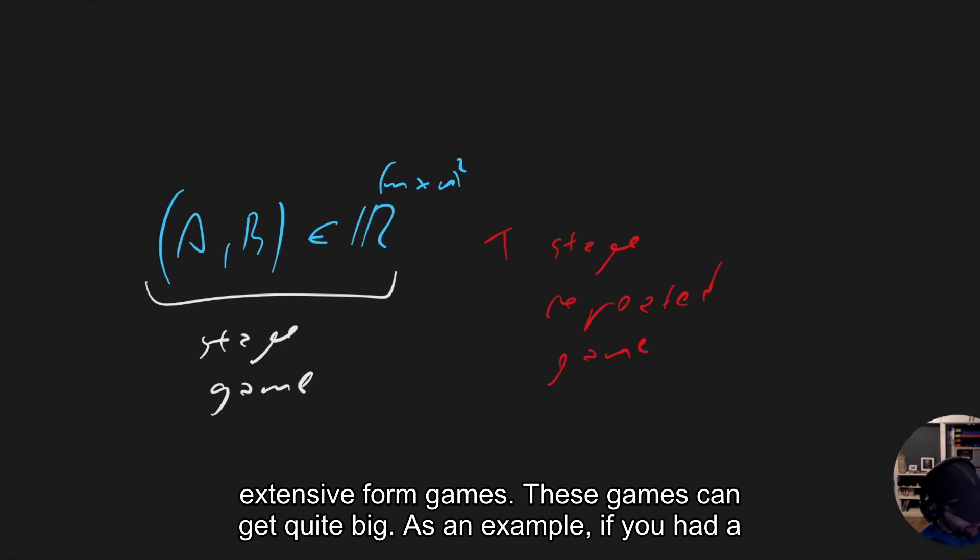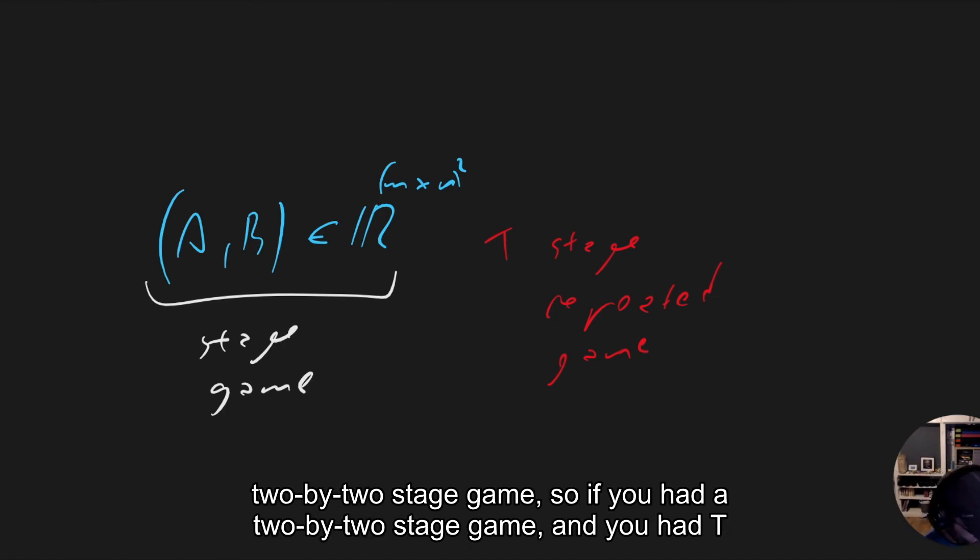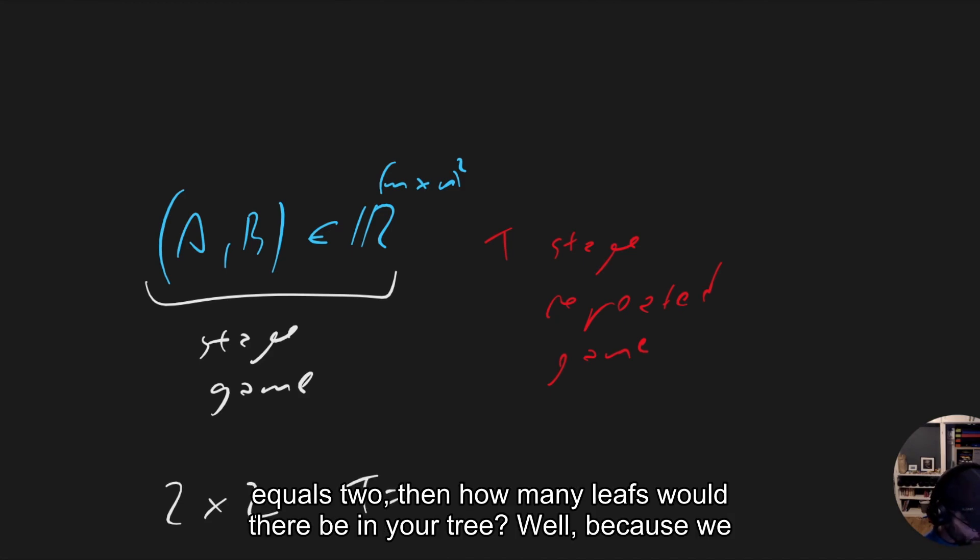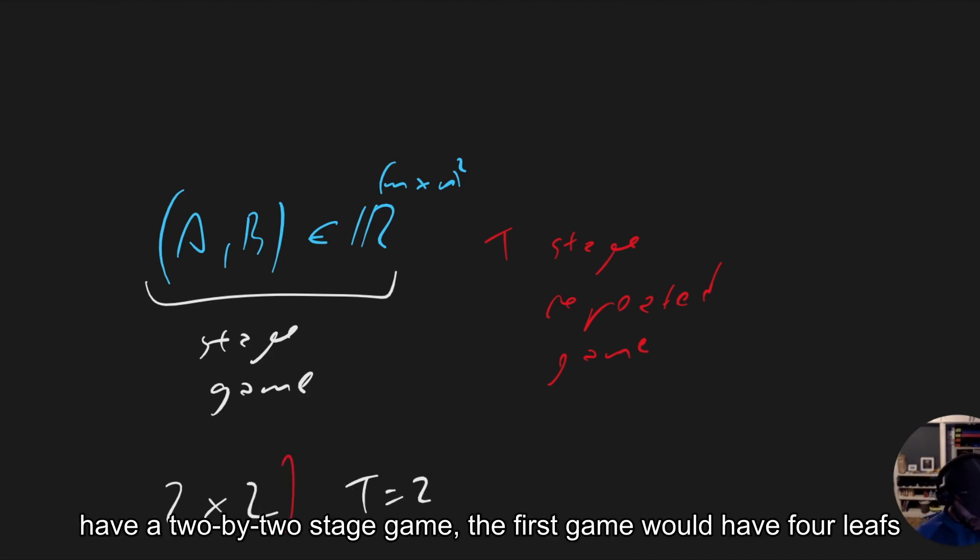As an example, if you had a two-by-two stage game and you had T equals two, then how many leaves would there be in your tree? Well, because we have a two-by-two stage game, the first game would have four leaves.